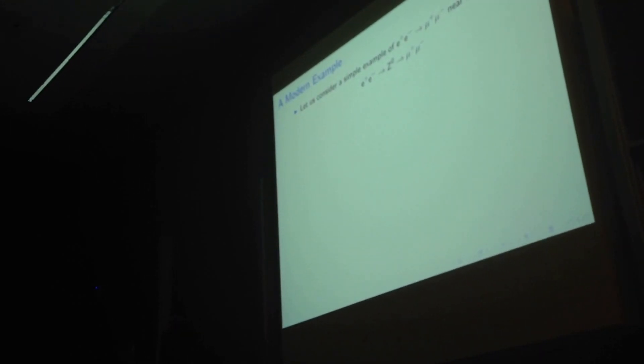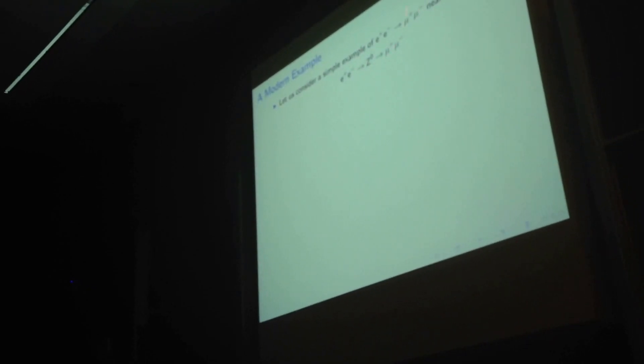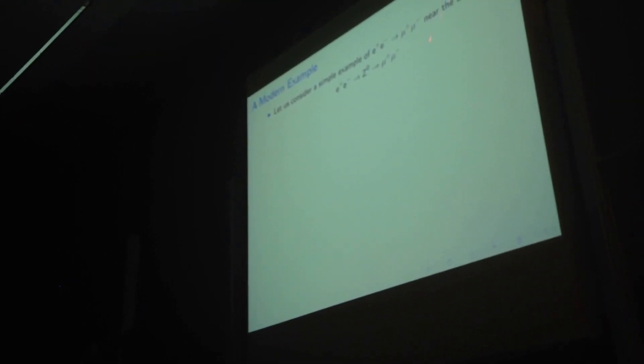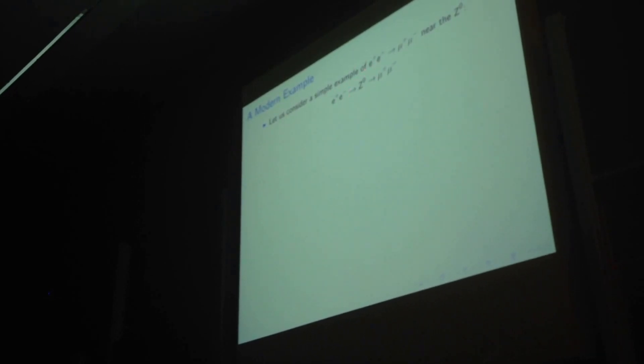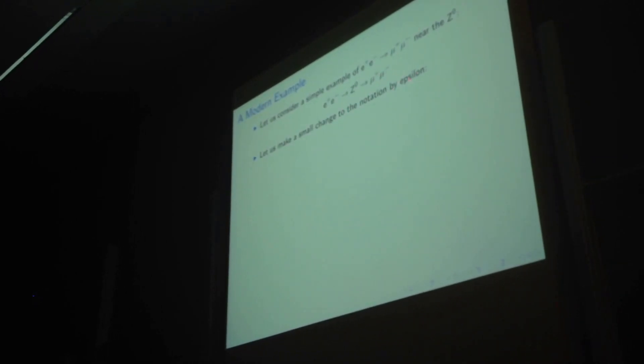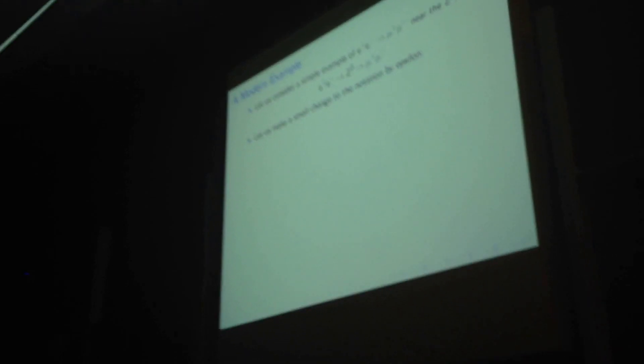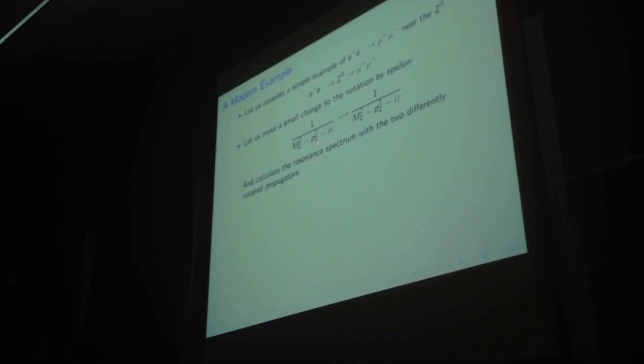So, now I'd like to jump to an example. Let's look at a rather simple one. Scattering of e plus e minus into mu plus mu minus, near the Z zero resonance. So, this is e plus e minus annihilated into a Z zero, which then decays into mu plus mu minus. And we'll make a small change in this notation by epsilon. Namely, we'll look at the propagators. So, here on the left, propagator mZ squared minus pZ squared minus i epsilon.